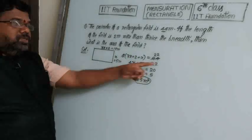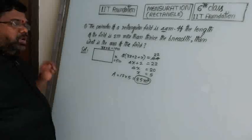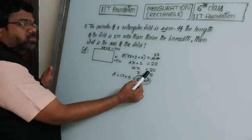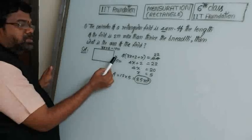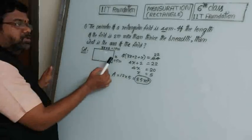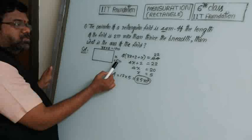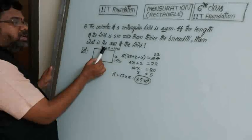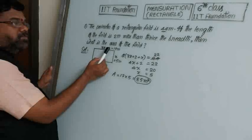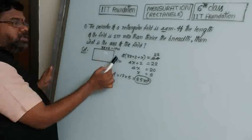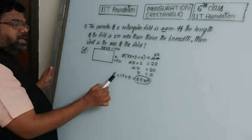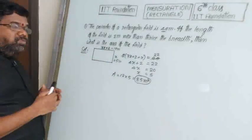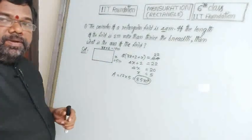Taking 2 to the other side: 4x equals 20, so x equals 5. Breadth is 5 meters, length is 3 into 5 plus 2 equals 17 meters. Area equals 17 into 5 equals 85 square meters.